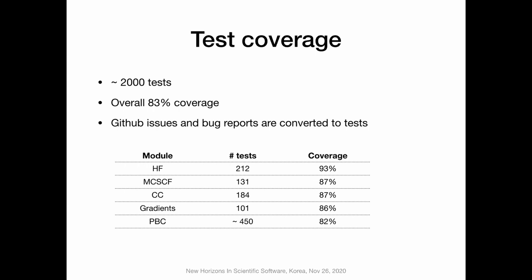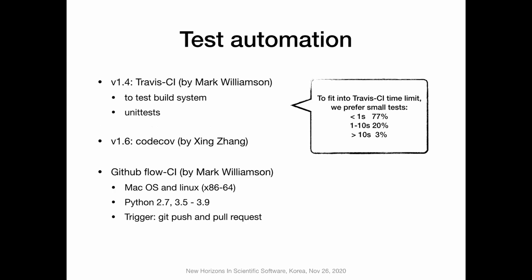When we did the test automation since Travis CI was introduced by Mark Williamson, we found that unit tests running on Travis CI had issues — Travis CI has a hard limit that you cannot use more than one hour to run automation tests. That enforced us to use small tests at the beginning, which is why most tests in the PySCF test package run in less than one second. Later we moved to GitHub Actions CI, a different continuous integration framework hosted on Microsoft Azure cloud, which allows us to use more resources.